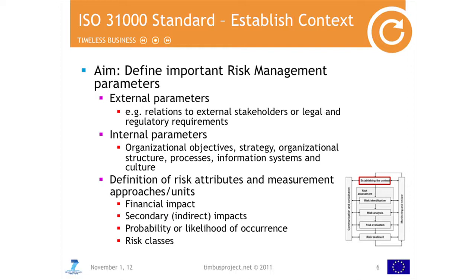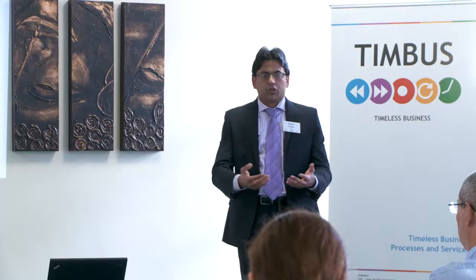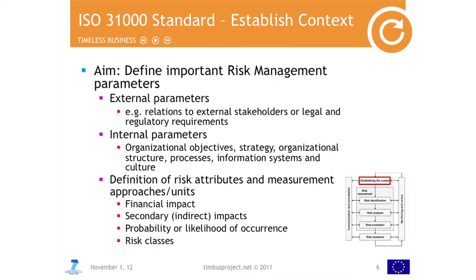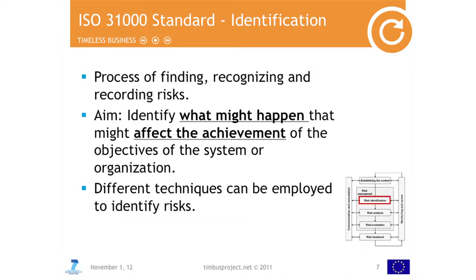Then we look at probability or likelihood of occurrences — how often do risks occur in an organization? For example, if you think about earthquakes in Japan, how often do they occur if you have part of your business there? And then essentially we define risk classes. Risk identification is basically a process of finding and documenting the risks which are relevant for your organization. The aim is to identify what might happen that might affect the achievement of organizational goals and objectives.